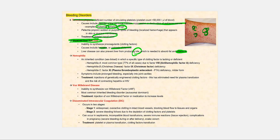Another bleeding disorder is hemophilia. It is an inherited condition. The defective allele is found on the X chromosome, so it's said to be sex-linked. And with hemophilia, there's a specific type of clotting factor that is lacking or deficient.